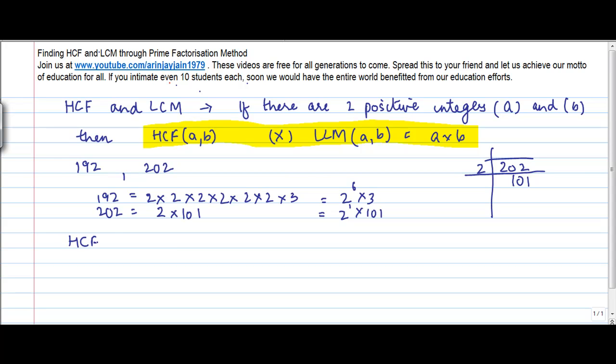Let us find out the highest common factor of 192 and 202. Which is the common multiple here? 2. And the lowest power—6 and 1, so 1. So it's 2 only.